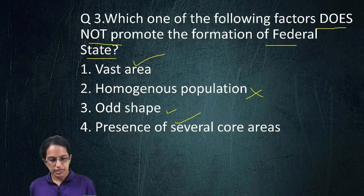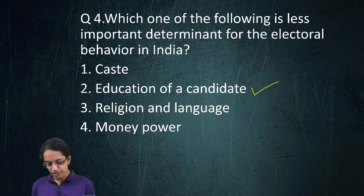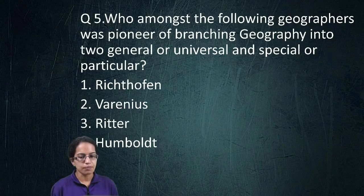The next question is: which one of the following is the least important determinant for electoral behavior in India? The answer is education of the candidate. The next question asks who among the following geographers was the pioneer in discriminating the two branches of universal and particular — the answer is Varius.